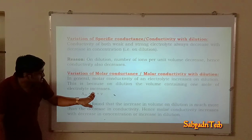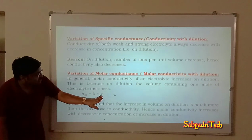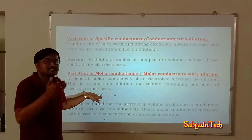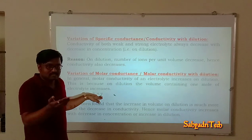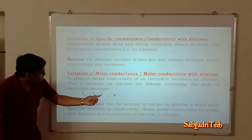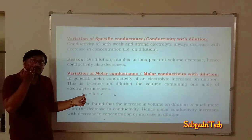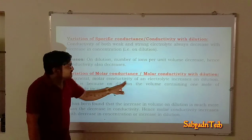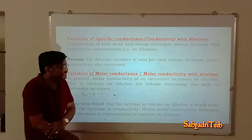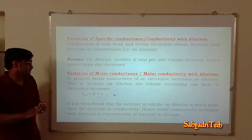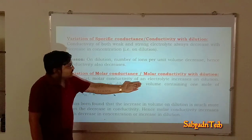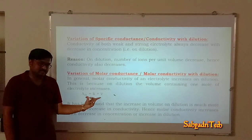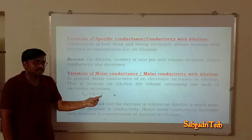If specific conductivity is kept constant, λm is directly proportional to V. Dilution means we are increasing the solvent concentration, so volume increases. If volume increases, molar conductance also increases. In general, molar conductivity of an electrolyte increases on dilution because the volume containing one mole of electrolyte increases, based on this equation.